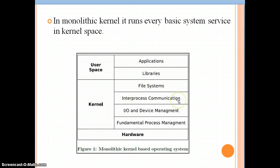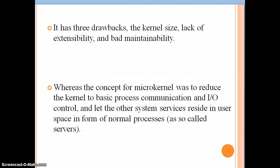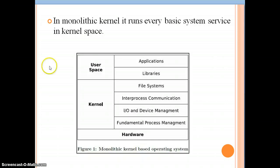In the kernel space, the file system, inter-process communication, input/output, device management, and all process management are carried out. All services and programs are run in the kernel space in the monolithic kernel operating system. This operating system has many drawbacks: the size of the kernel, the lack of extensibility, and poor maintainability. The kernel size is bigger compared to the micro kernel operating system, because all processes run in the kernel space.